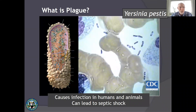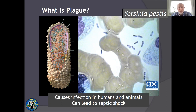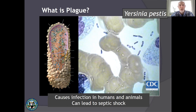First I'll start with a little bit of background. What is plague? Plague is the disease caused by infection with the bacteria Yersinia pestis. Yersinia pestis causes infections in humans and animals, and if you become infected it can lead to septic shock and death. It's a problem.